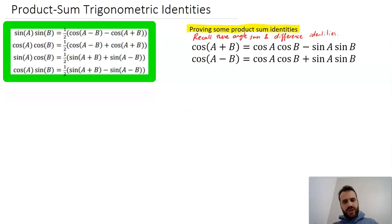Where did they come from? It's a little easy to prove where these come from. Recall these angle sum and difference identities. We can call this first one equation one, and we can call this next one equation two.